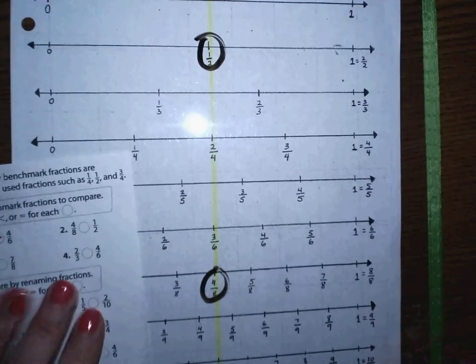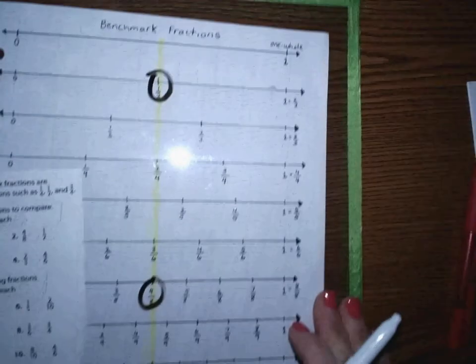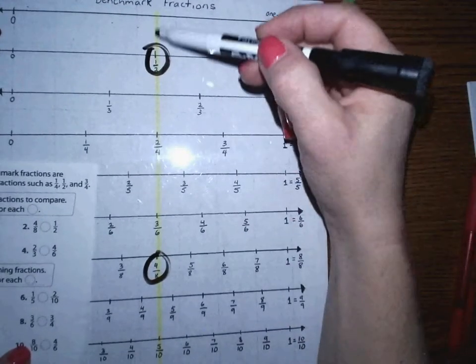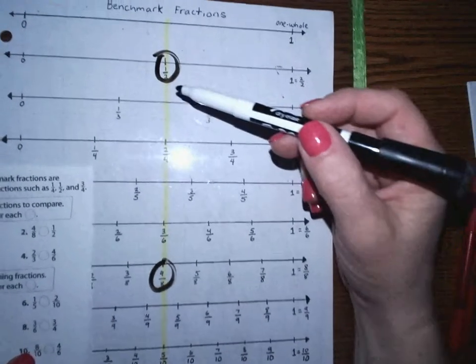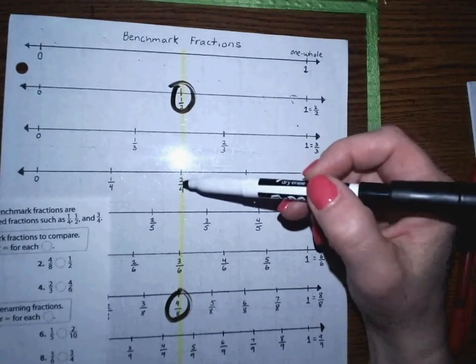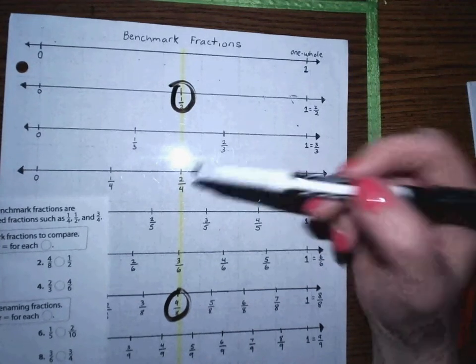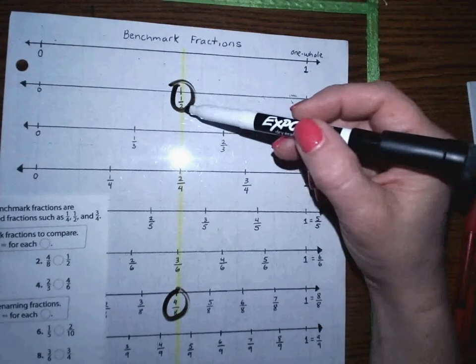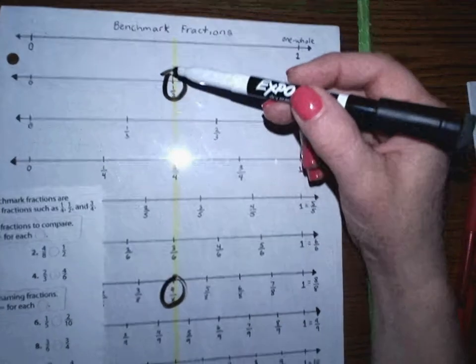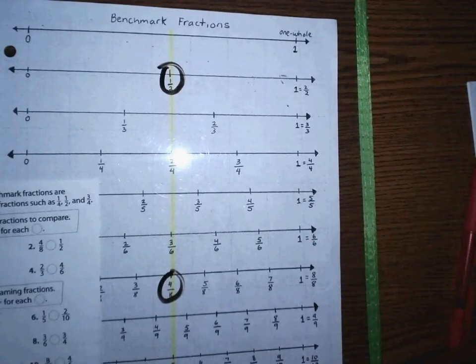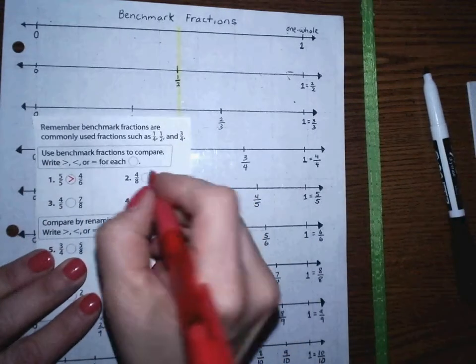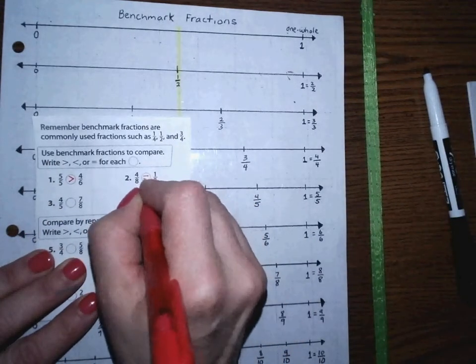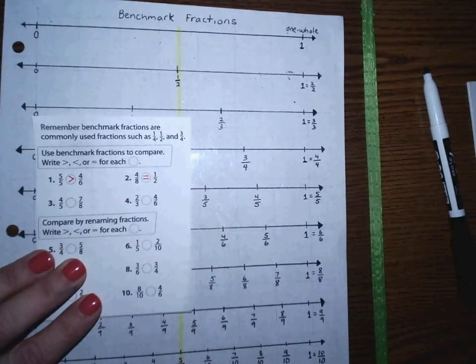Today we went through and we highlighted on the student's number lines — we made a highlighting mark all the way down, so any fraction that touches this line would also be equivalent to one-half. I can see here one-half is on this line, and four-eighths is on this line. So I would say that four-eighths is equal to one-half.